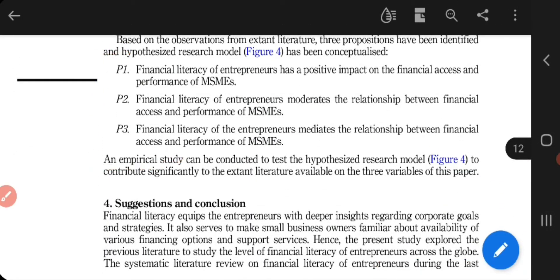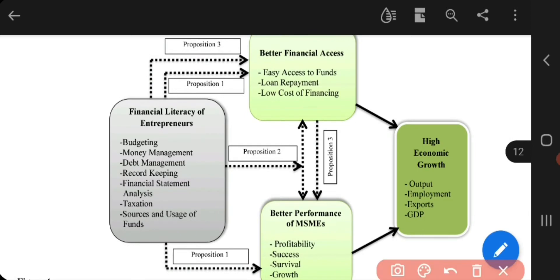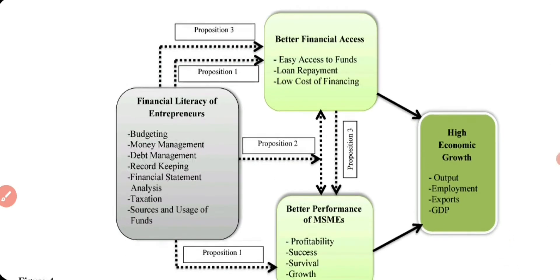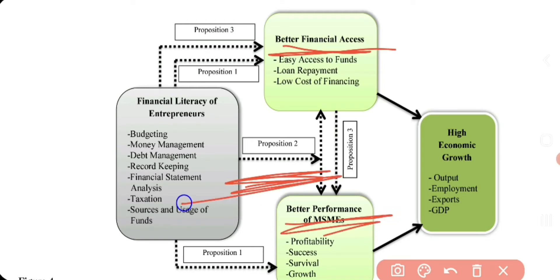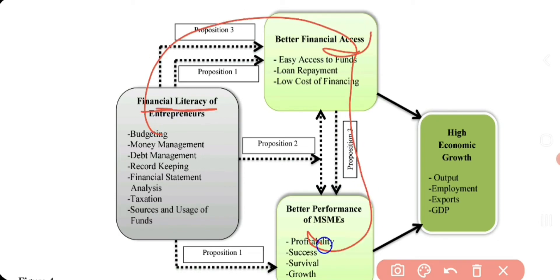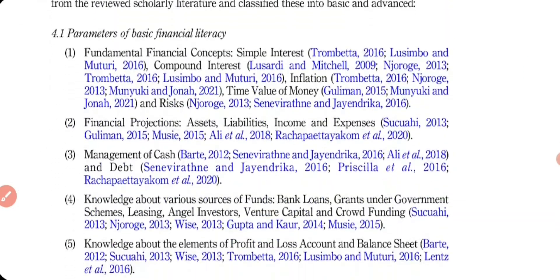Based on these propositions, I built a hypothesized research model. Proposition one states that financial literacy of entrepreneurs has a positive impact on financial access and performance. Proposition two states that financial literacy moderates the relationship between financial access and performance. Proposition three states that financial literacy mediates the role such that better financial literacy leads to better financial access, which in turn leads to better performance and higher economic growth.